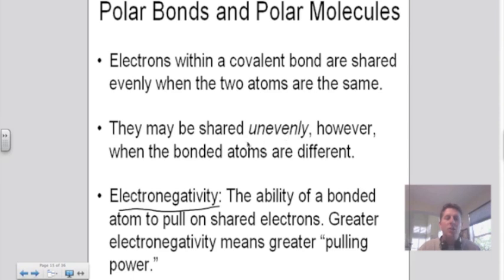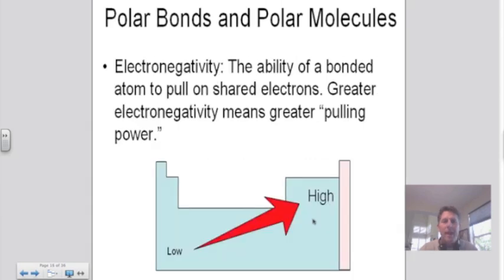This goes back to a property of all matter called electronegativity — the ability of a bonded atom to pull on shared electrons. So some atoms want to pull on the electrons more than other atoms do. This becomes a trend in the periodic table — yet another trend you may want to know for your test coming up in less than a week.